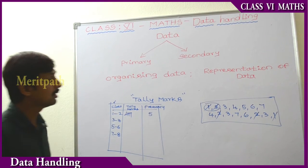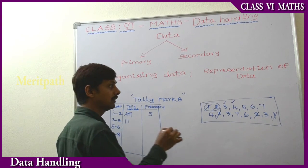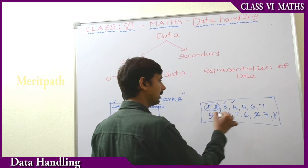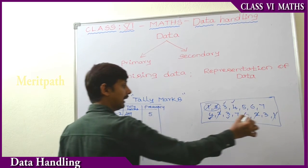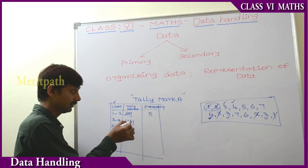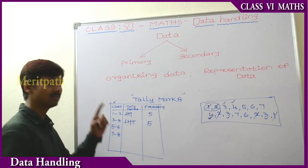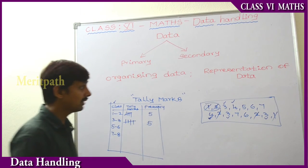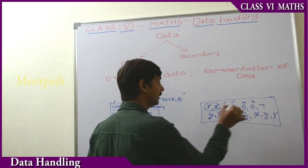Similarly, for class 3 to 4: we see 3 and 4 appear 2 times, and there is 1 more 3 present — so 2 times. With all values counted, the frequency for 3 to 4 is 5, because 5 values are present between 3 and 4. For class 5 to 6: we have 5, 6, and 6 — that is 3 times. So the frequency for 5 to 6 is 3.